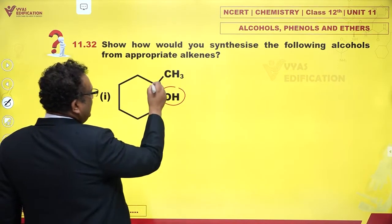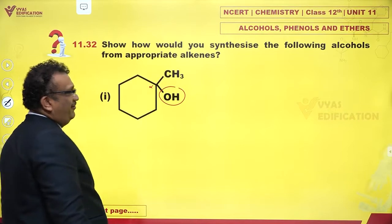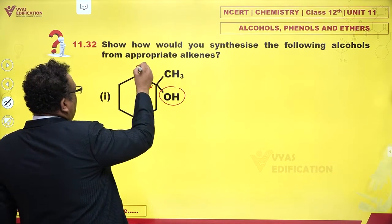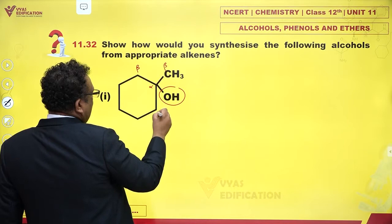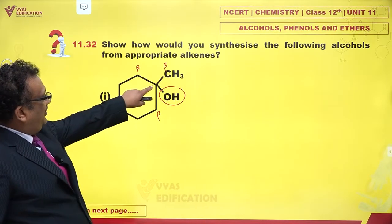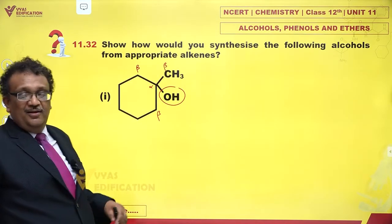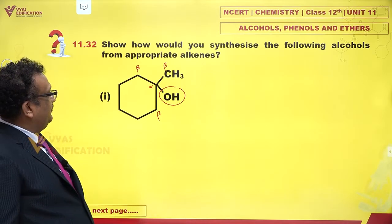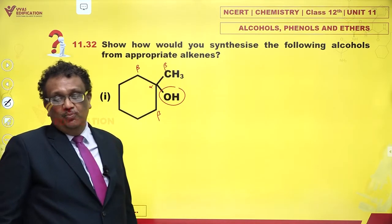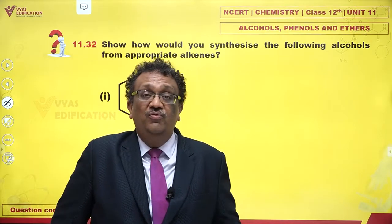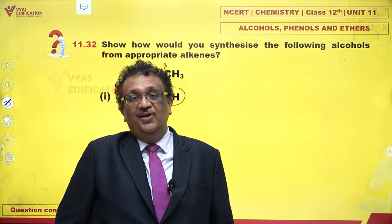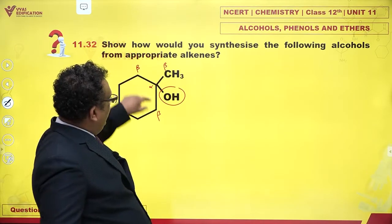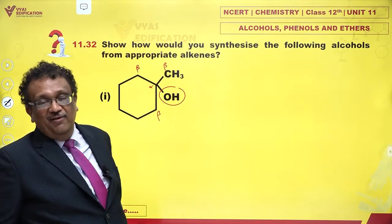Whichever carbon the OH is on, mark it as the alpha carbon. The neighboring carbons are beta carbons. All you need to do is remove one hydrogen atom from beta and OH from alpha carbon.